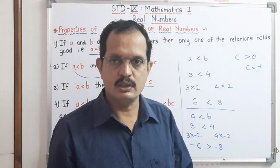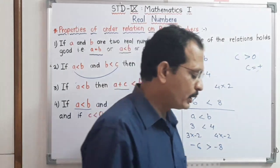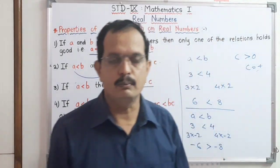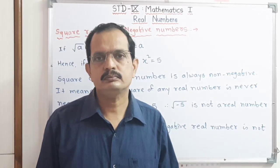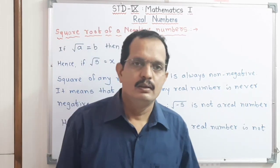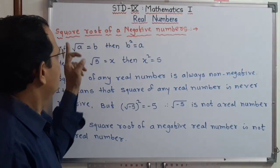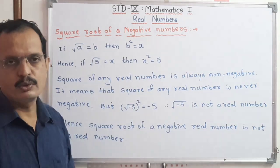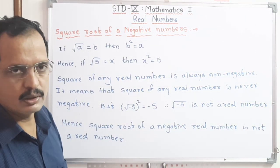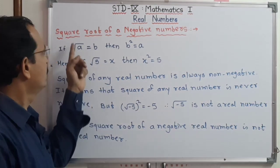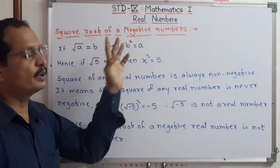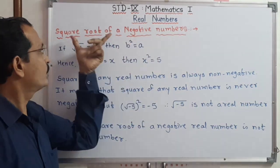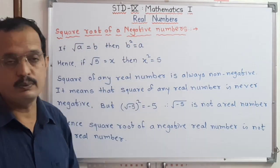Now we have to learn about the square root of a negative number. We have to learn another property: the square root of a negative number. Let us find out the square root of negative numbers.